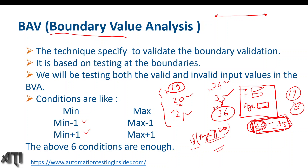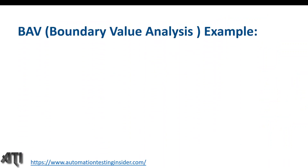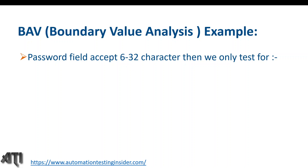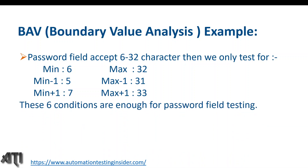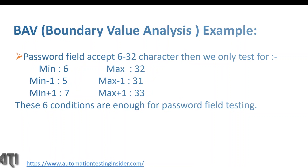Another example of boundary value analysis: if a password field accepts 6 to 32 characters, we test only at the boundaries — minimum 6, maximum 32, minimum minus 1 = 5, minimum plus 1 = 7, maximum minus 1 = 31, maximum plus 1 = 33. The invalid values are 5 and 33; all others should be accepted. These six conditions are enough for password field testing, giving us six test cases.